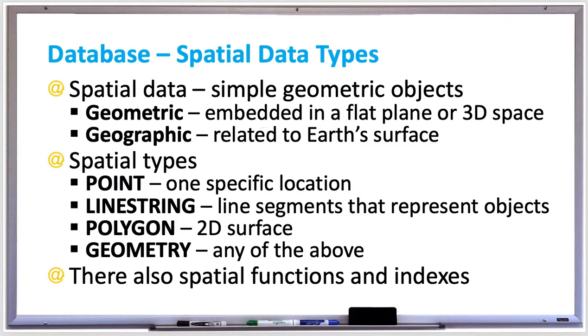Spatial data is simple geometric objects such as points, lines, or polygons, and they're represented as coordinates in an n-dimensional space. They can be two-dimensional or three-dimensional. Well-known text, or WKT, is the format for writing spatial data, which specifies a shape name followed by a vertex coordinate.